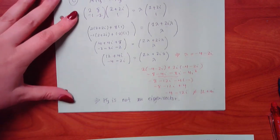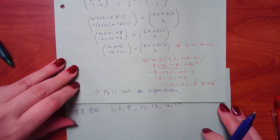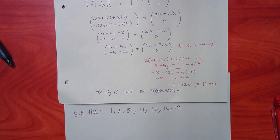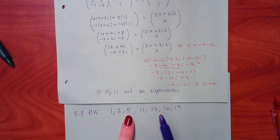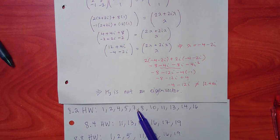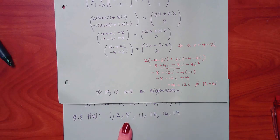You have to be careful — I keep saying eigenvalue, but eigenvalues are the lambdas and eigenvectors are the K's. Now we do have homework. The only problems you'd be able to do based on what I just went over — checking to see if the vectors work or not — are just problems 1, 2, and 5. We'll get into the other problems next class.